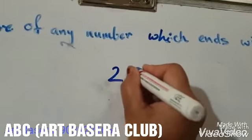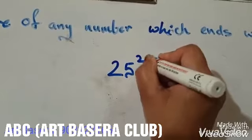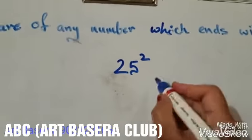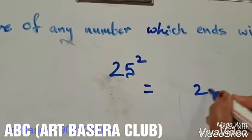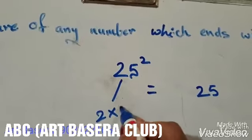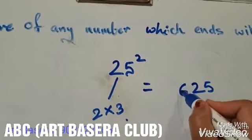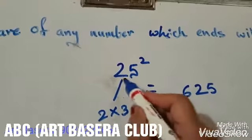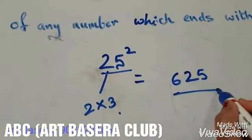Suppose we have to find out the square of number 25. What we will do? We will just write 25 and what is 2 into 3? 6. That means the square of 25 is 625.